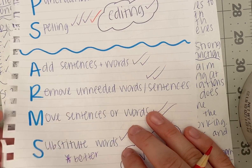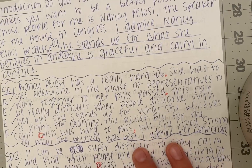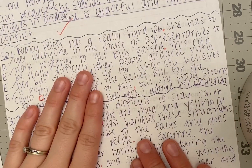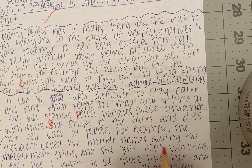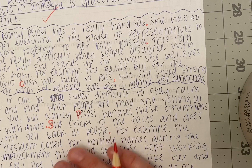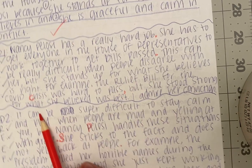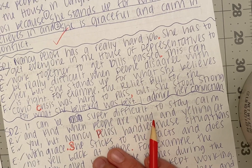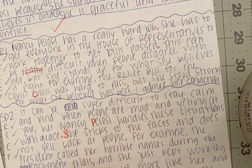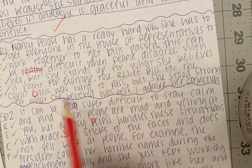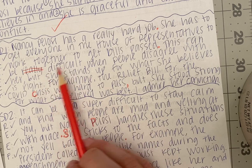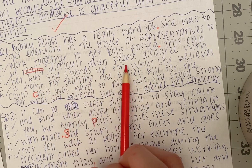ARMS. Add sentences and words. So my introduction, I like. I'm going to go ahead and put a check on my introduction — I'm happy with it. We don't want our introduction to be super long because it's really just introducing what we're going to talk about. I said 'really' twice in this paragraph and I don't like that. So I said 'she has a really hard job' — I'm going to take out 'really.' That is under substitute or remove. I'm just going to say 'it can be difficult when people disagree with her, but she stands up for what she believes is right.'